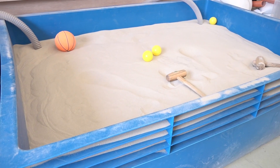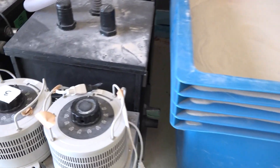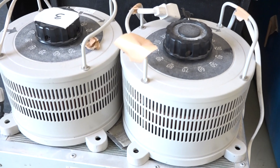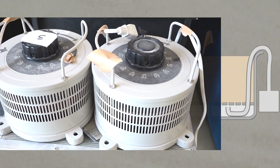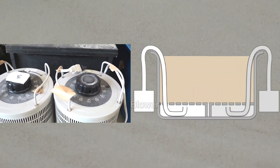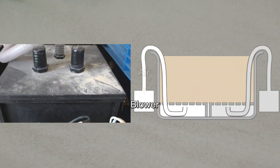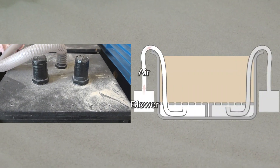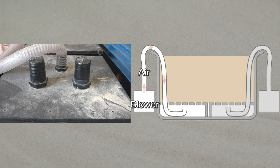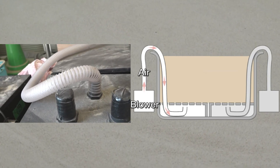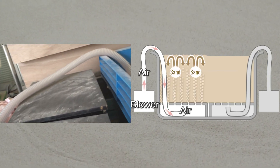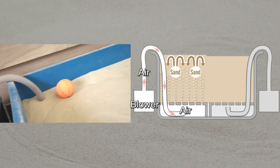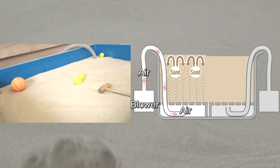Sand in a container can be lifted up by pumping air through the bottom. The air creates small gaps in the sand, allowing it to move about freely, almost as if it's been transformed into a liquid.